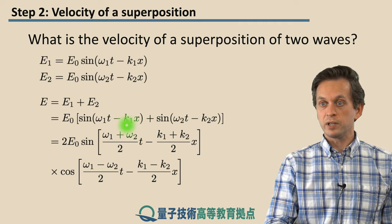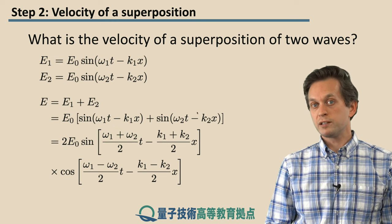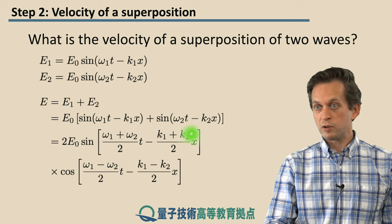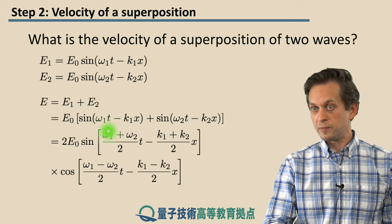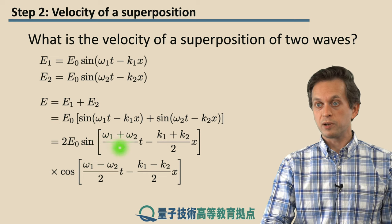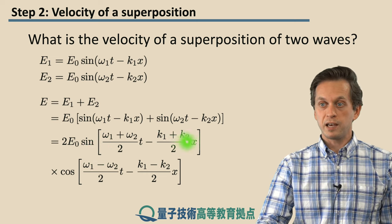And what we do next is we apply a trigonometric identity. That allows us to write this superposition E as a product of two wave signals. One is a sine signal, and the other one is a cos signal. For the sine, the angular frequency is the following, ω1 plus ω2 over 2, and the new wave number is k1 plus k2 over 2.